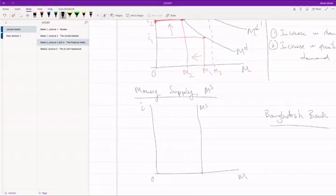Money supply is fixed. Regardless of what's happening in the economy, it's fixed. Now, if the central bank decides to increase the money supply or decrease the money supply, they can do that. We will see how in a bit.